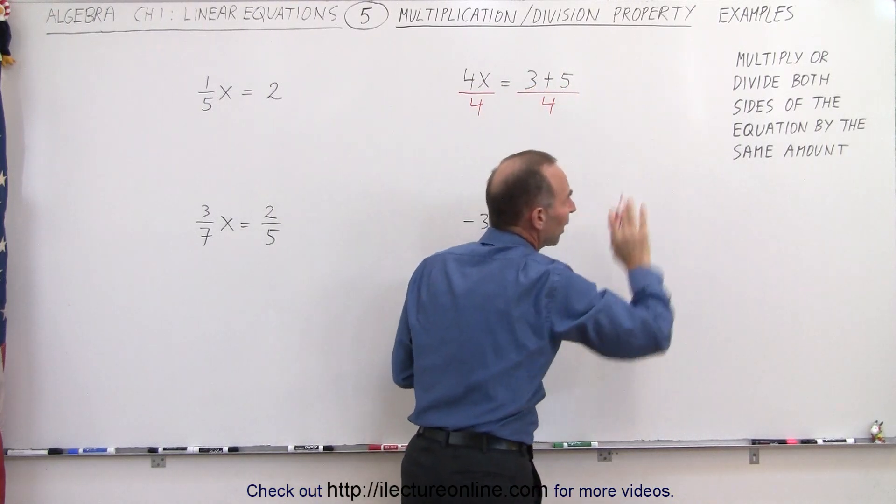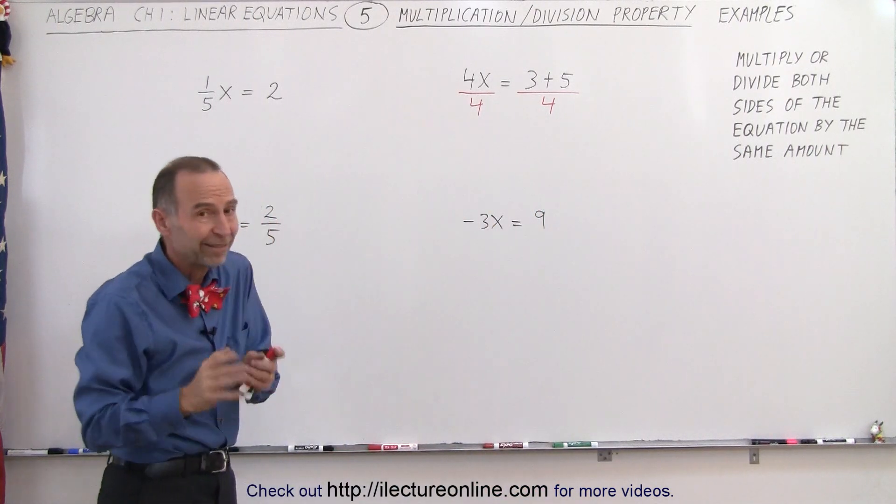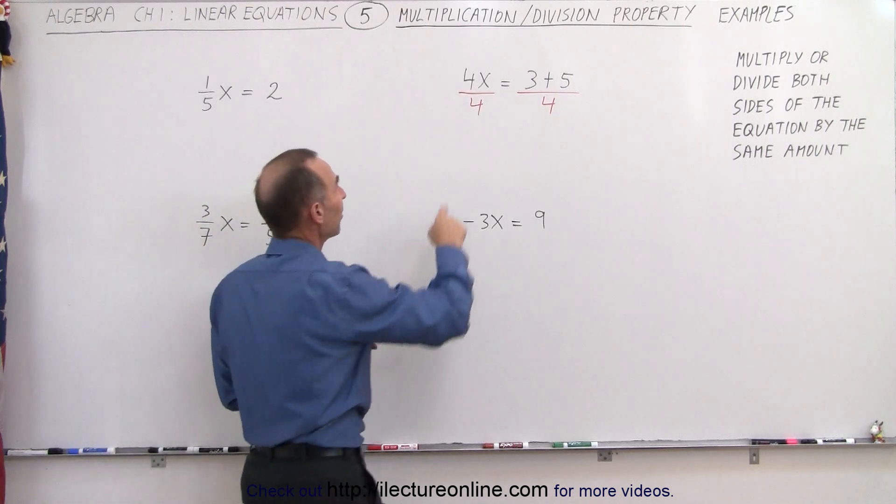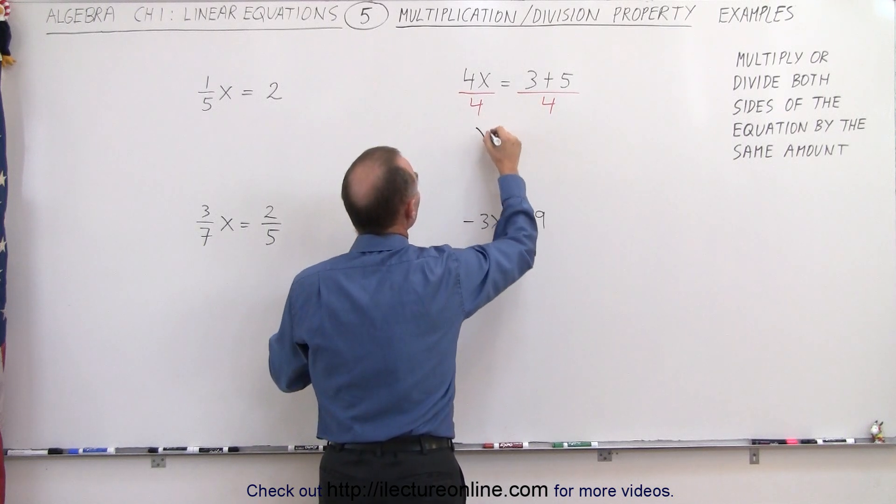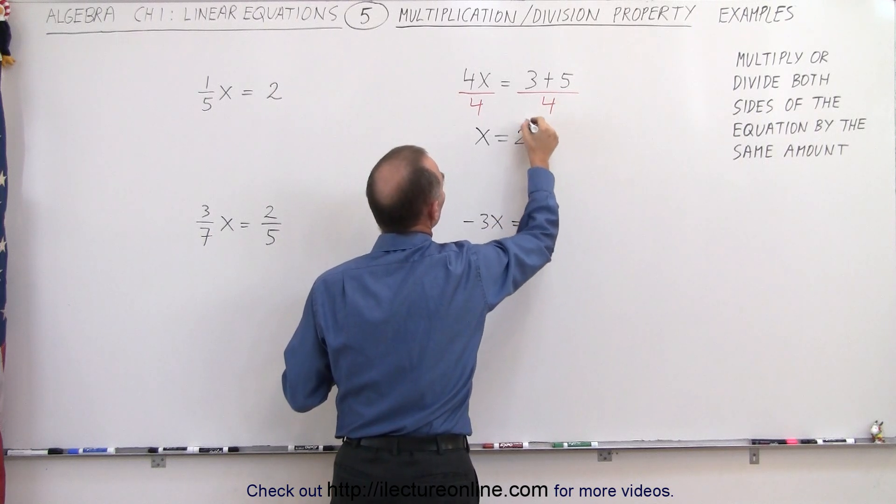Remember, we need to multiply or divide both sides of the equation by the same amount, otherwise the left side no longer equals the right side like it did before. On the left side we have 4x divided by 4, which is simply x. On the right side we have 3 plus 5, which is 8, 8 divided by 4, which is equal to 2.